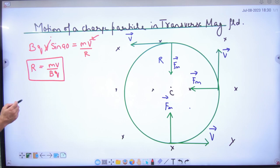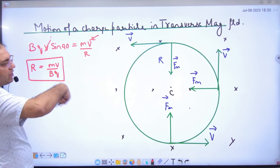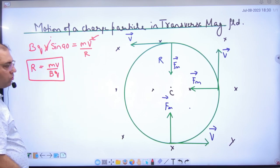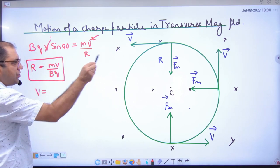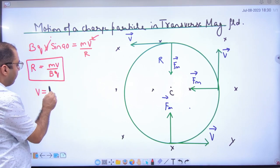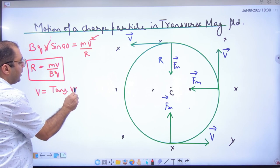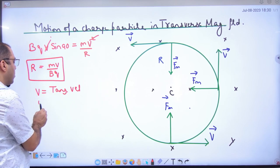Now R is equal to MV by BQ. The question is, because the particle is rotating in a circle. We discussed in circular motion that V is tangential velocity. But it is rotating in the particle circle. So it has another velocity.